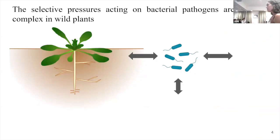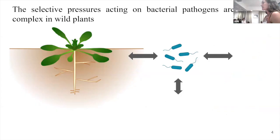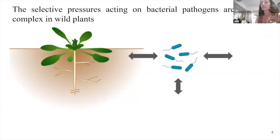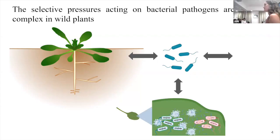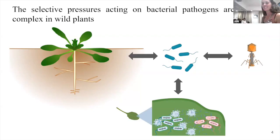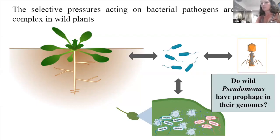One idea for why we might be seeing much greater genetic diversity in wild populations versus agriculture is that the selective pressures in these wild populations are much more complex. In contrast to agriculture, where we often have monocrops — a single genotype of plant across the field — in wild populations we see much greater plant-host genetic diversity. We also know that bacteria encounter a much more diverse array of other microorganisms, and a diverse array of phages within plant leaves.